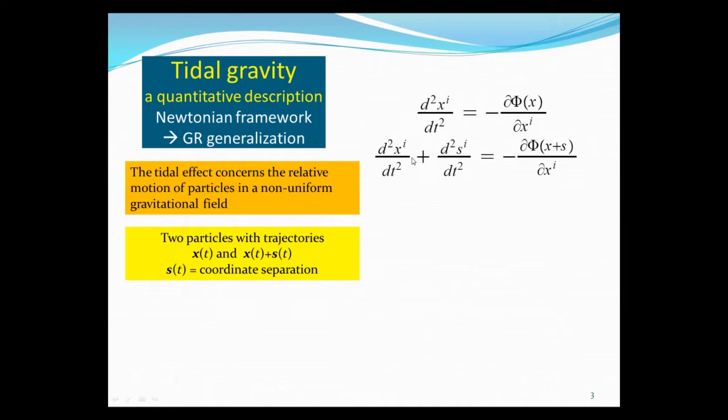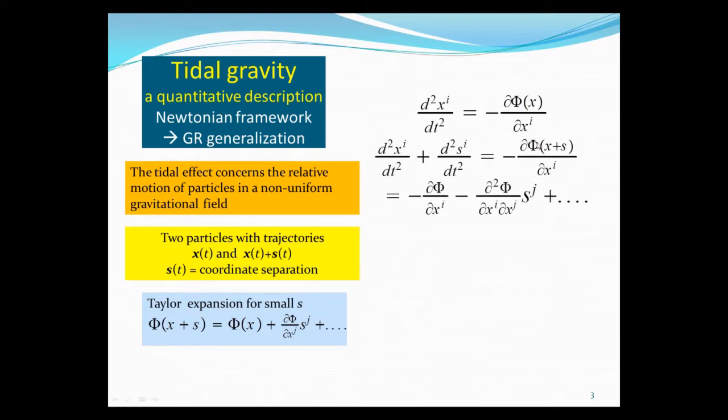The second equation of motion for the second particle is, again, on the left-hand side is the acceleration. On the right-hand side is minus the gradient of the gravitational potential, but located at x + s. Now, s being small, so I can make a Taylor series expansion of the gravitational potential at x + s, just the same as gravitational potential at x plus a derivative term.